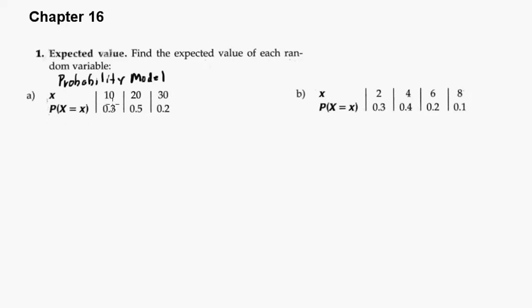And then each outcome has a probability associated with it. So the probability of a 10 is 30%, the probability of a 20 is 50%, and the probability of a 30 is 20%. And these should always add up to, if you added them, they would always add up to 1. So you can always check the model by making sure that they add to 1.